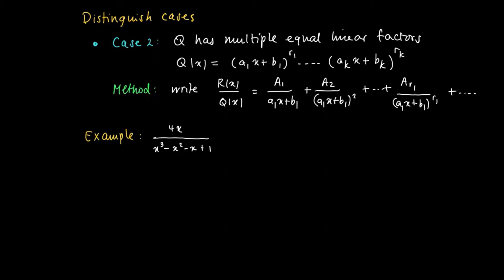So consider the following example. We have 4x divided by x³ - x² - x + 1.